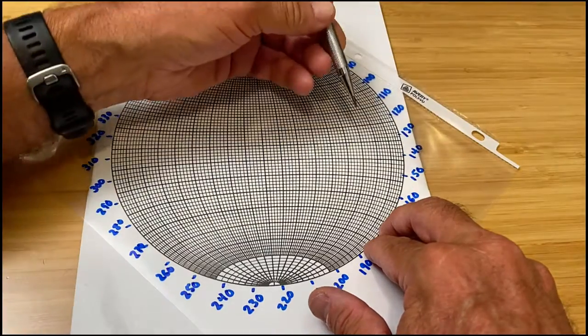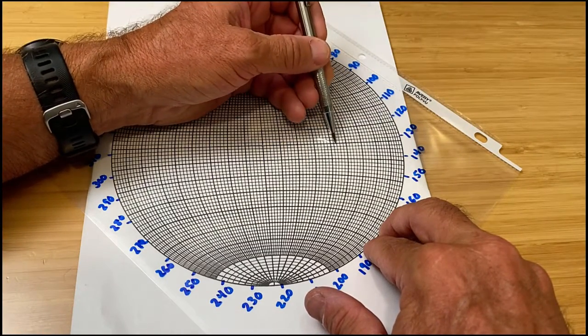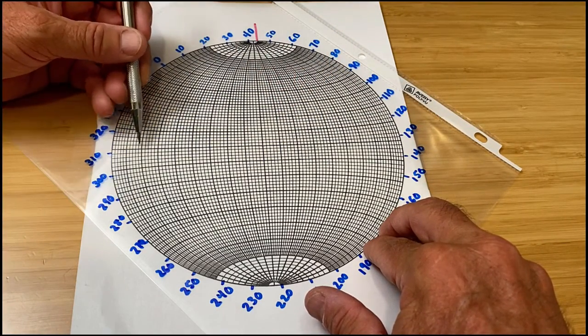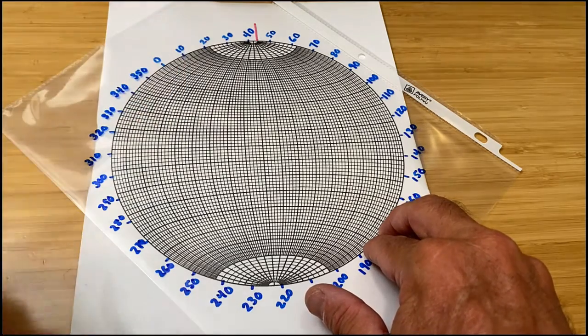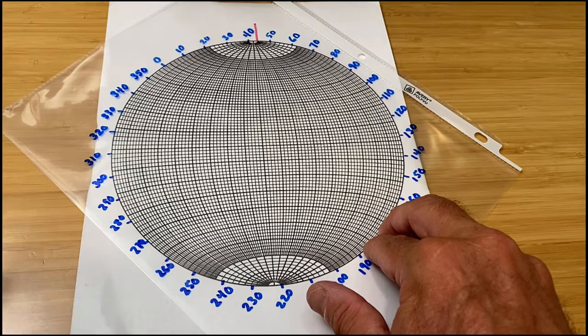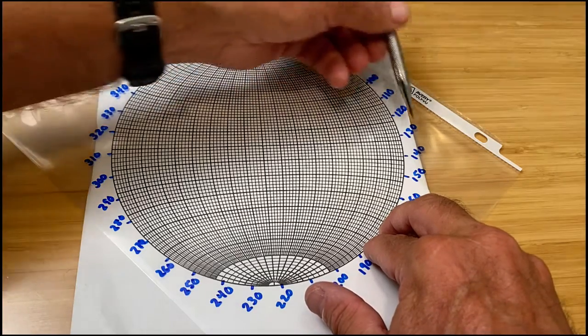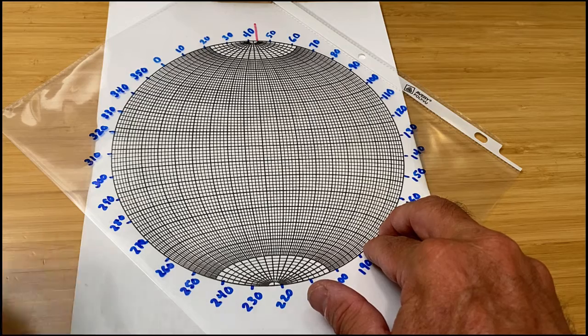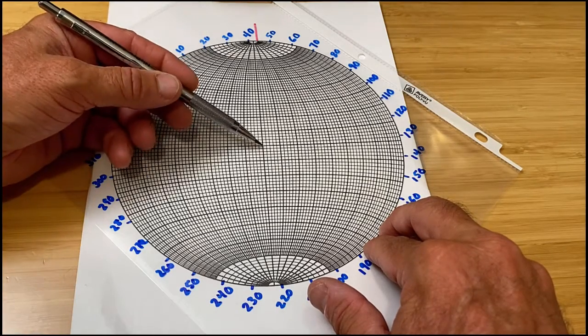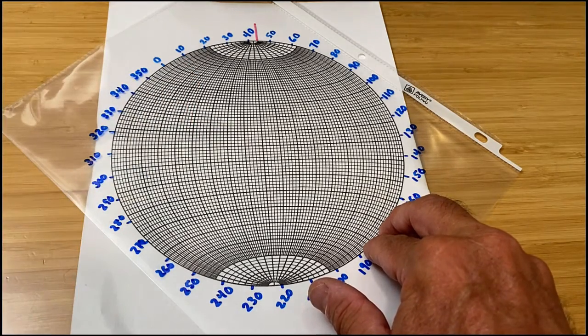And on the other hand, if the plane dips to the west, then you count in 45 degrees from the western end of the primitive line. In both cases, we count inward from the edge of the stereonet towards the center because the edge represents a zero degree dip and the middle represents a 90 degree dip. So our 45 degree dips must be somewhere in between.